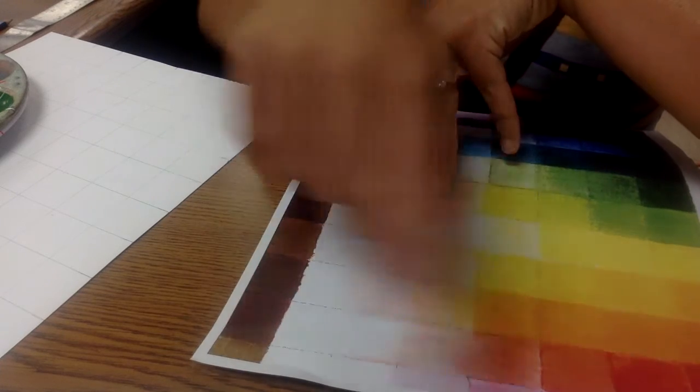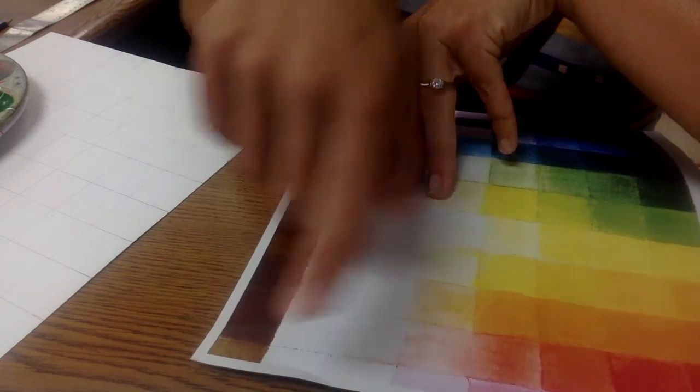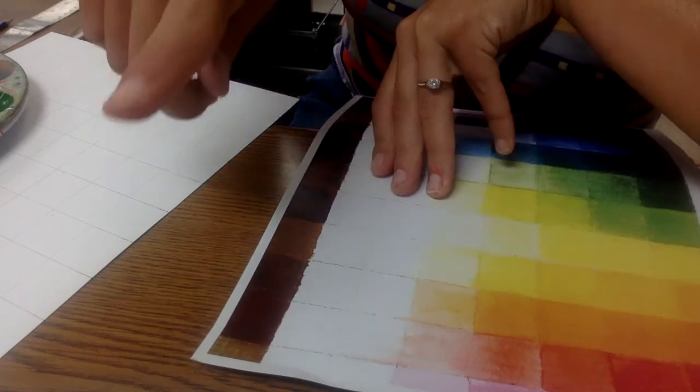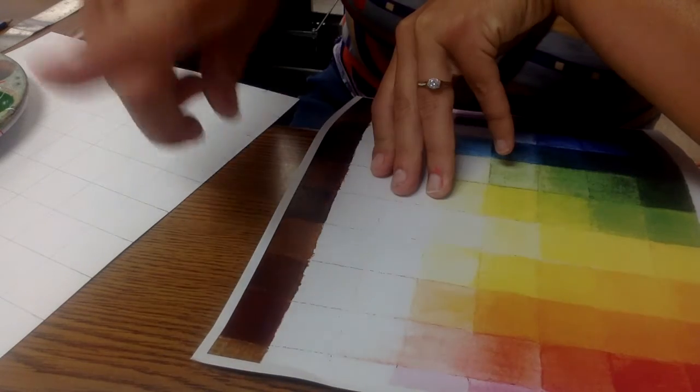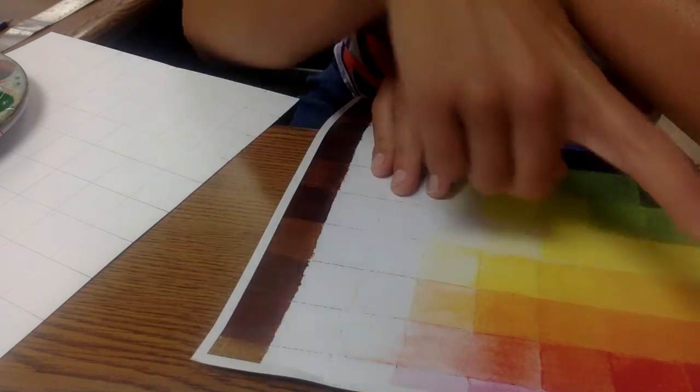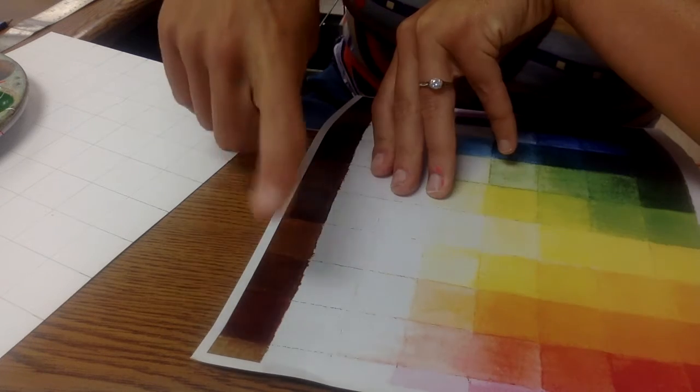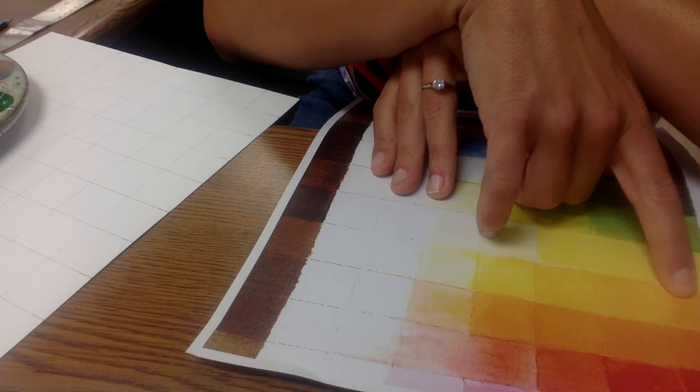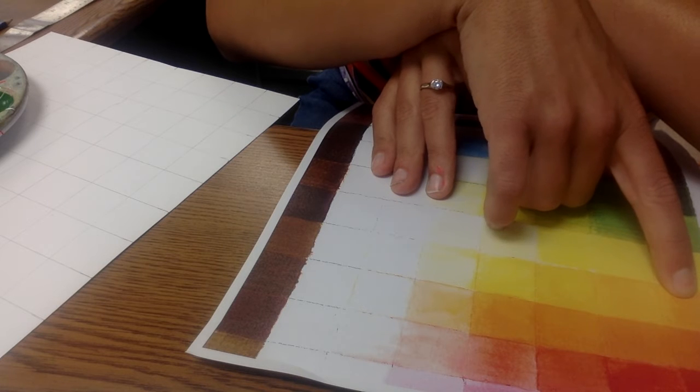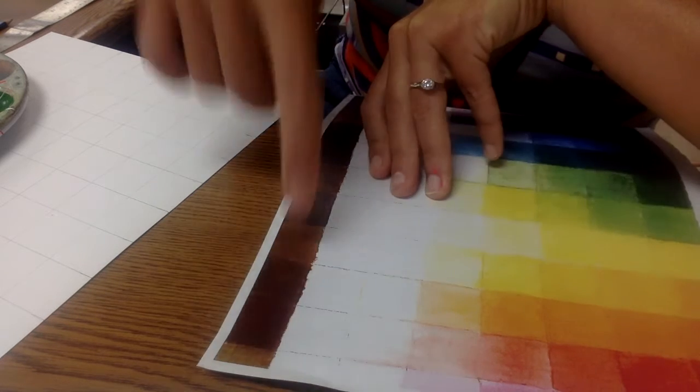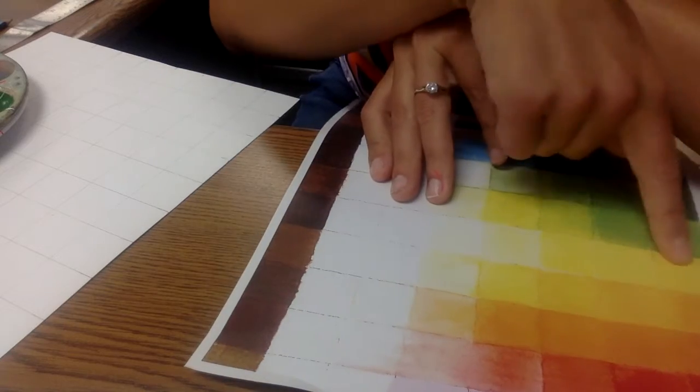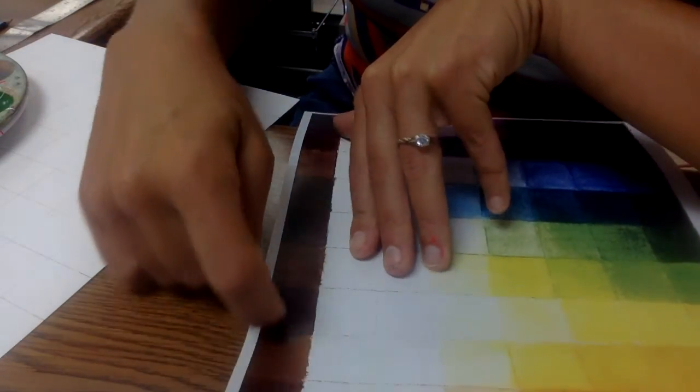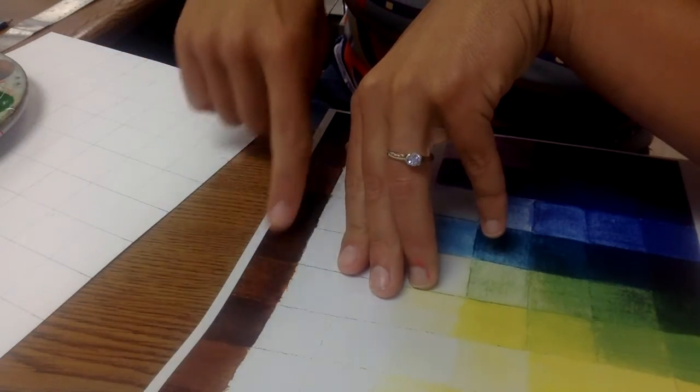Then in this whole column at the end, this is the neutralized form of the color. So this is red mixed with the color directly across from it on the color wheel. This is red mixed with green, this is red orange mixed with blue green, this is orange mixed with blue.